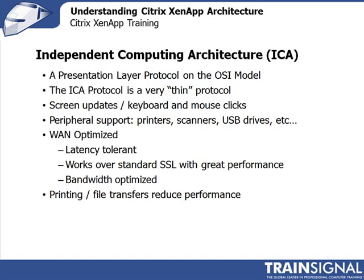In order to understand XenApp and Citrix in general, you have to understand the importance of the Independent Computing Architecture — the ICA protocol. Today, the ICA protocol is one of the thinnest, best remote desktop protocols available because it works very well on the LAN, very well on the WAN, and extremely well over the internet or any type of remote connection. I still remember using ICA over a dial-up modem. It's a very thin protocol created to work over both high-latency and low-latency links.